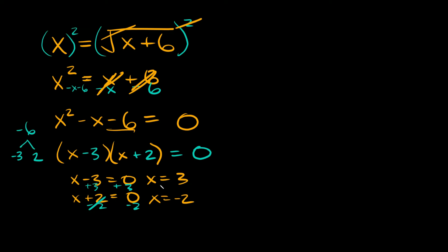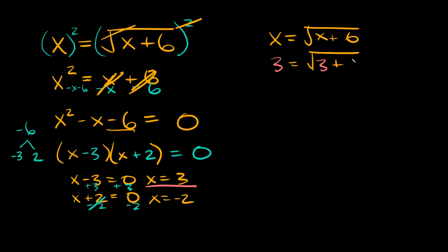Let's check our first solution x equals 3 by plugging it into the original equation x equals the square root of x plus 6. We get 3 is equal to the square root of 3 plus 6, which is the square root of 9. This is obviously a true statement — 3 is equal to the square root of 9. So x equals 3 is a valid solution.